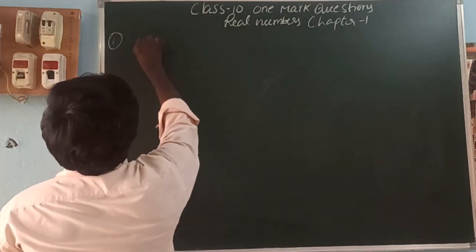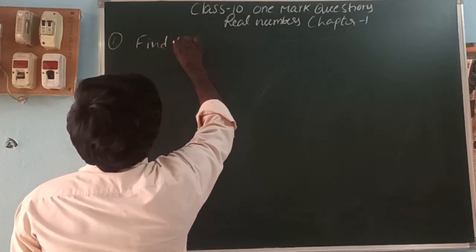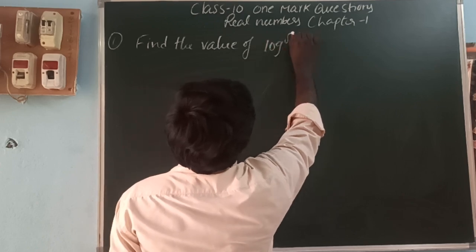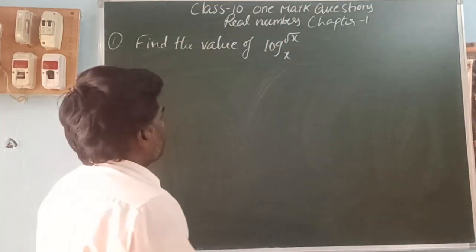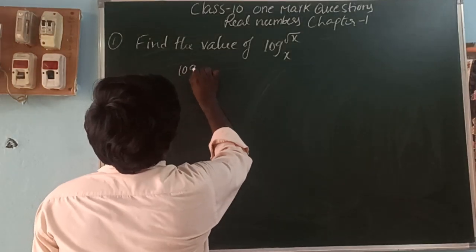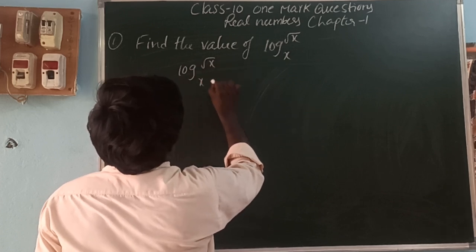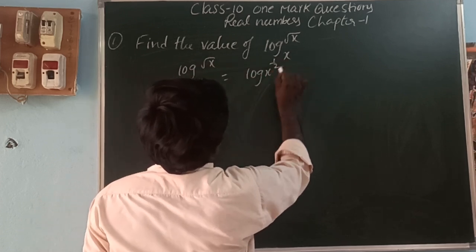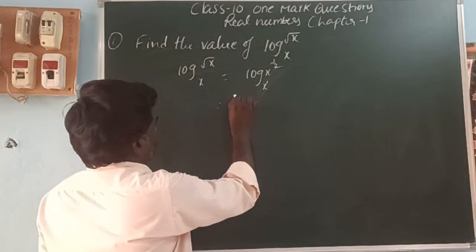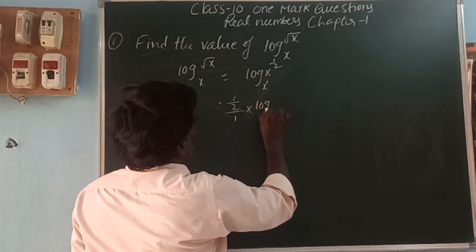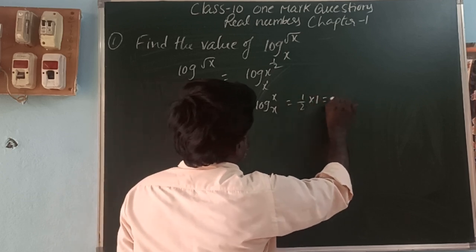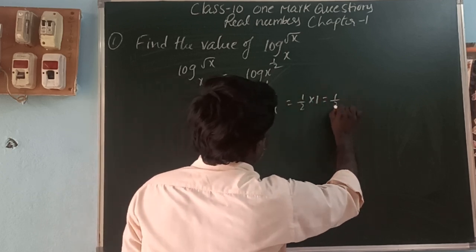First one: find the value of log(√x) base x. Here, root means the exponent form 1/2. So log(√x) base x, we can write as log(x^(1/2)) base x. Here x we can write as x power 1. So that is (1/2)/1 into log x base x, that is 1/2 into 1. So the answer is 1/2.